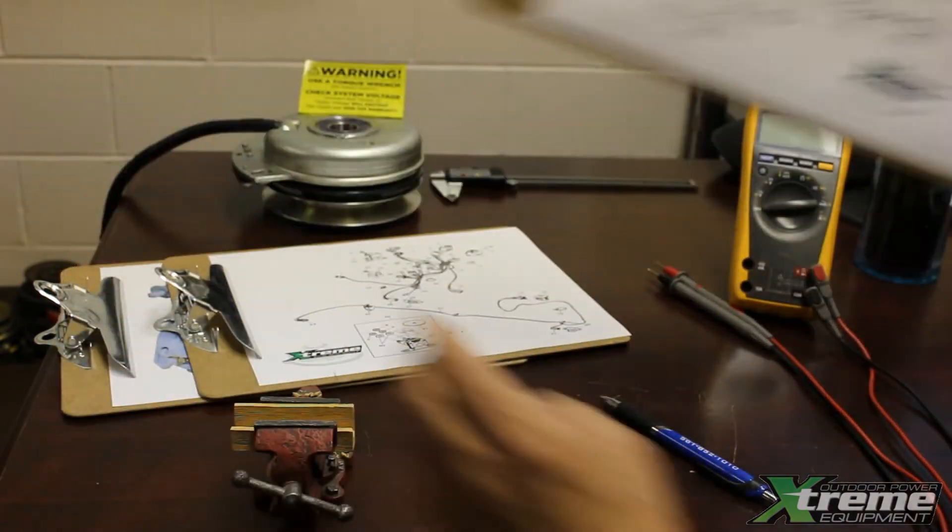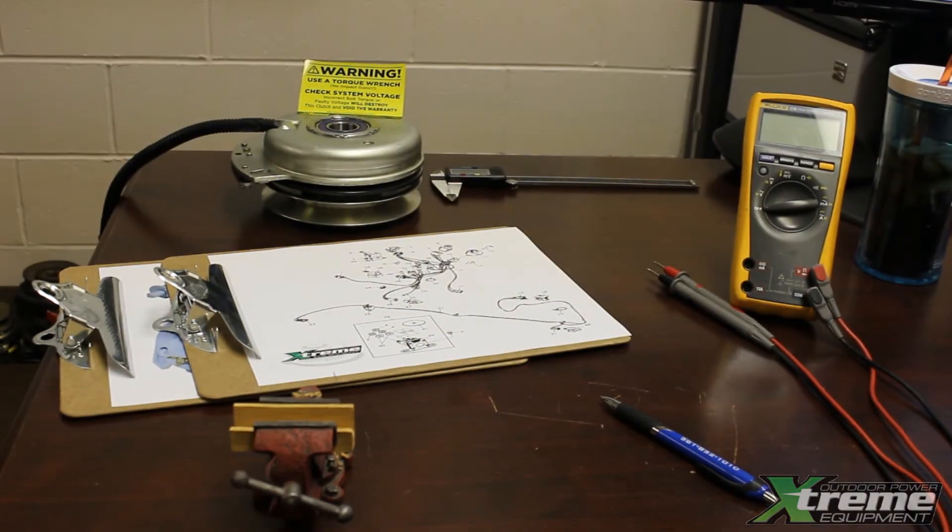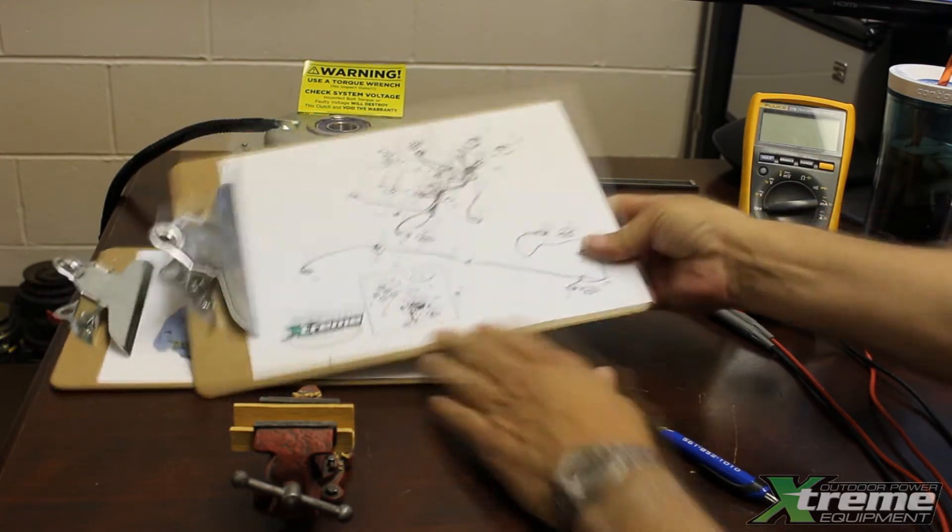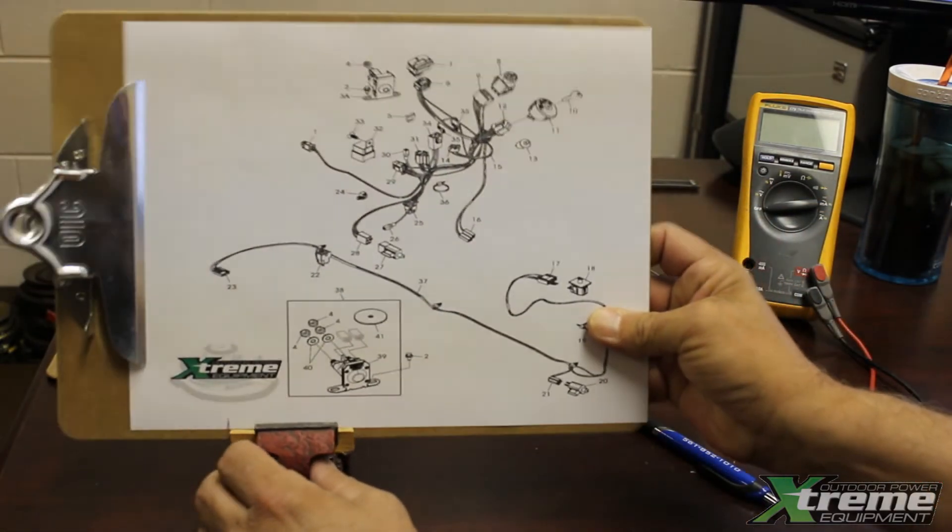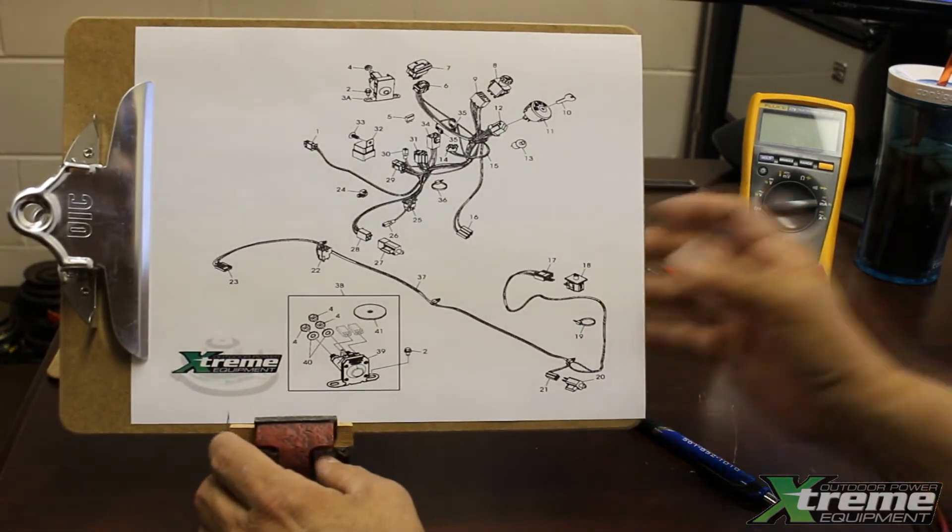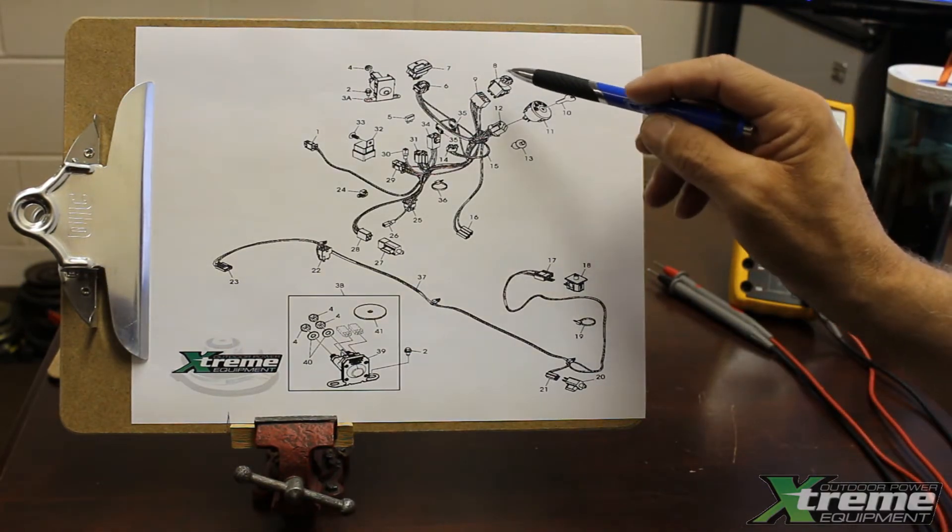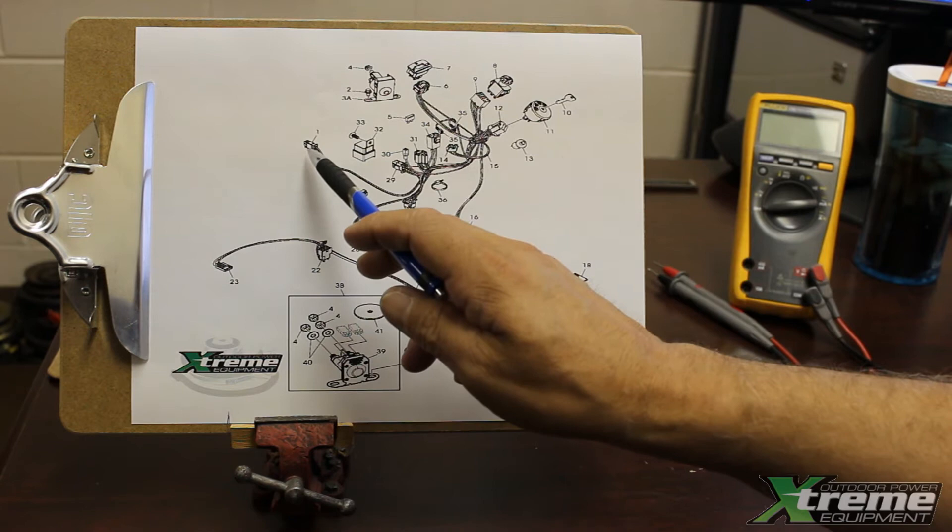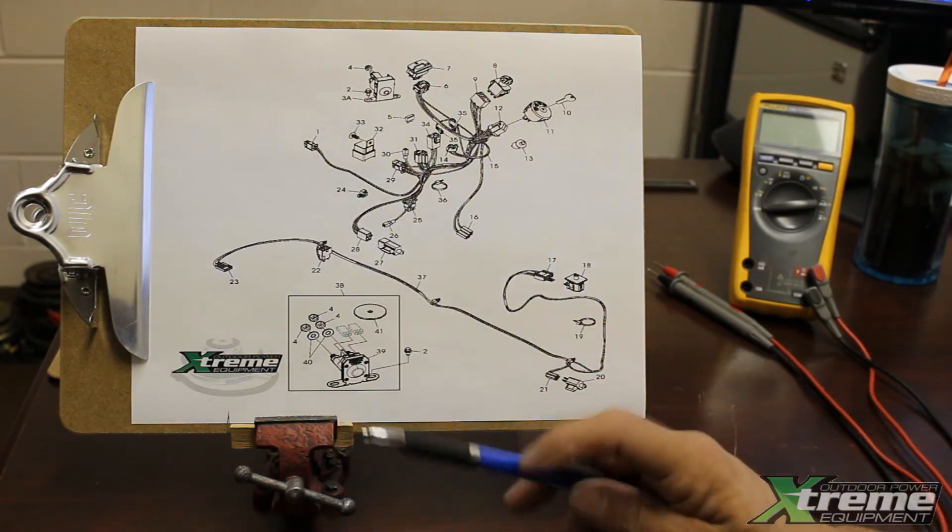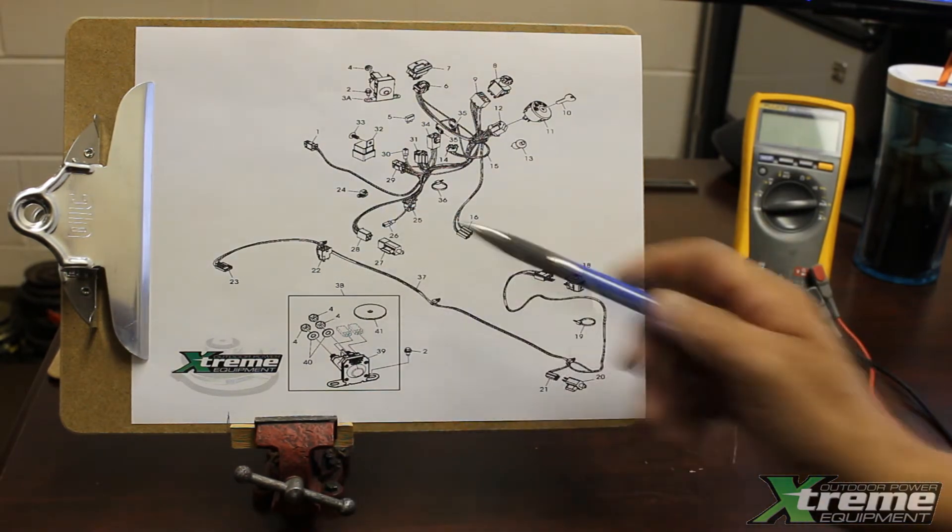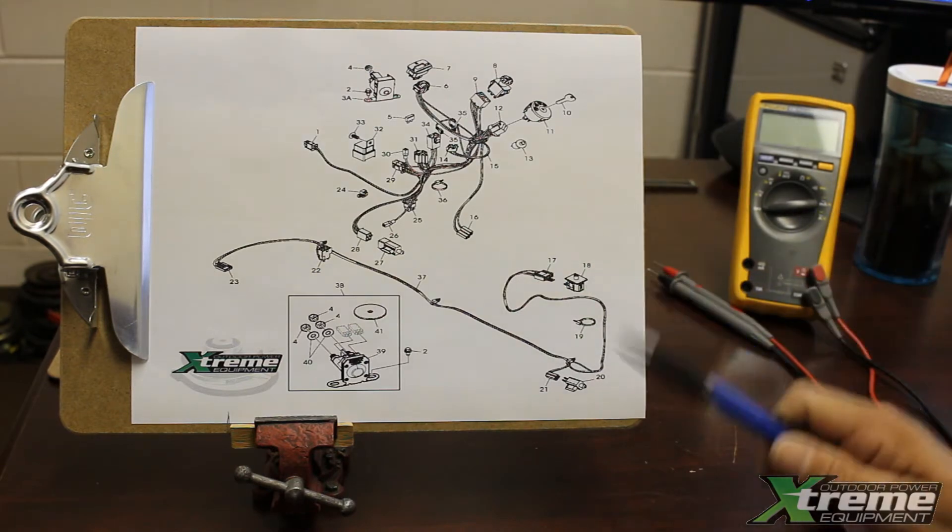Now there are a lot of variations of those sorts of diagrams, and some of them are a little easier to read than others. I like this type personally, it shows pictures: the key switch, the PTO switch, we see here this is some kind of a safety switch, another safety switch, so on and so forth. It helps you to better identify, there's your seat switch.